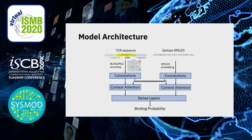The epitopes are inputted as SMILES, which is a form of representing small molecules, and you can see an example here. On the embedding we then perform convolutions with several different kernel sizes, followed by a context attention layer. Here we use the T cell receptor as context for the epitope and the epitope as context for the T cell receptor. This context attention layer determines which atoms and bonds the model thinks are important and takes into greater consideration. Then we have some dense layers and we end up with the binding probability.